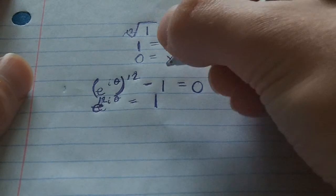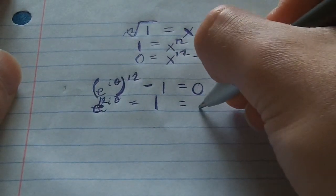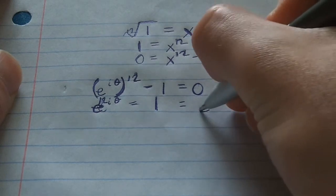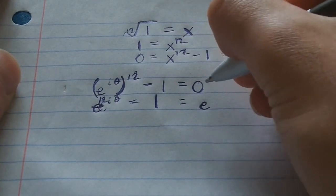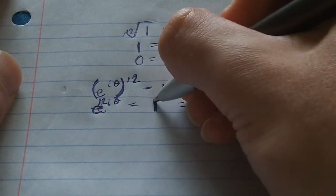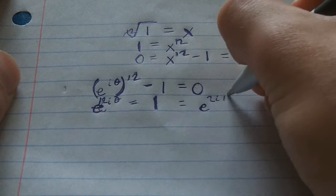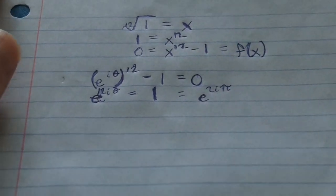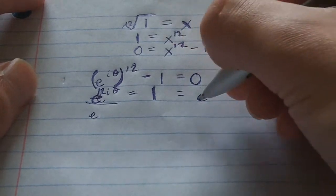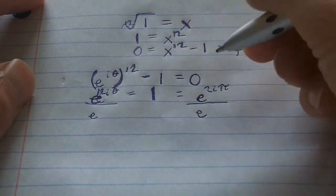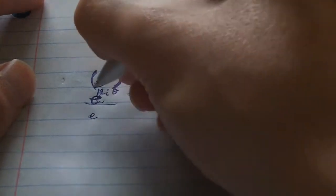And what is one exactly? Well, we've seen in the past that just one by itself, just the number one, is actually expressible as e to the two i pi. So that's quite fascinating. One way of thinking about it is we can divide both sides by e to the twelfth i pi, actually, to get this to kind of cancel.